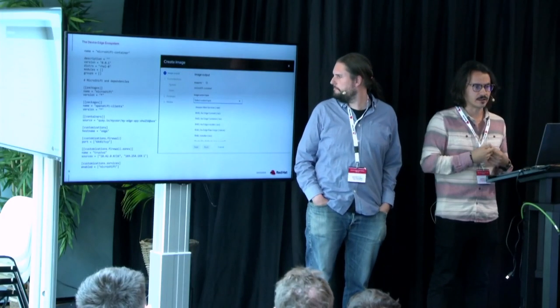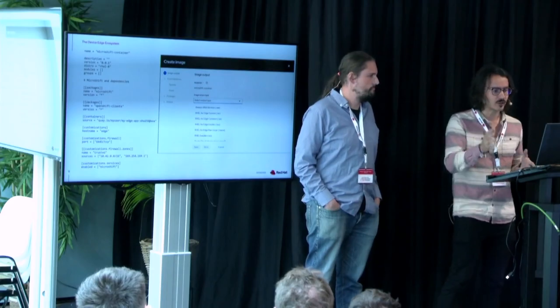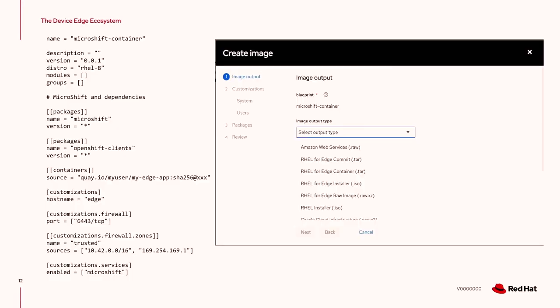In the left side you can see what a blueprint definition looks like. It's written in TOML format, and you can put name, description, version, and so on. Then you can choose the packages you need in your Edge device. Once the image is produced, you can plug it into your Edge device — it will get installed with all these packages and dependencies.